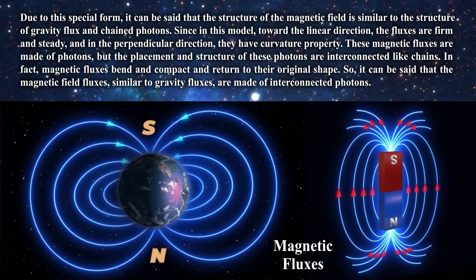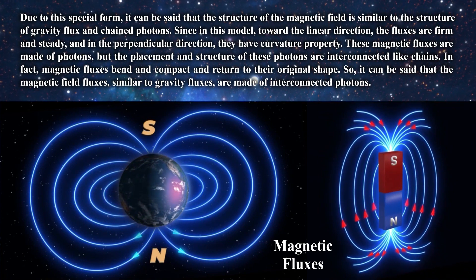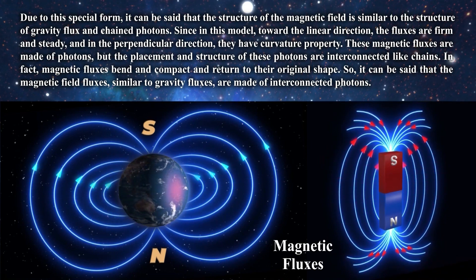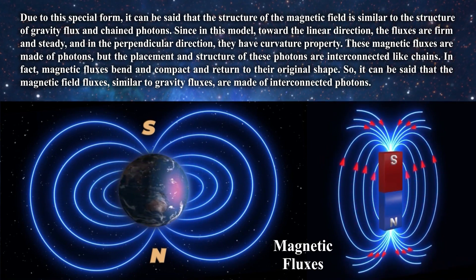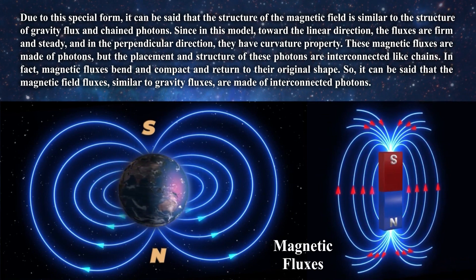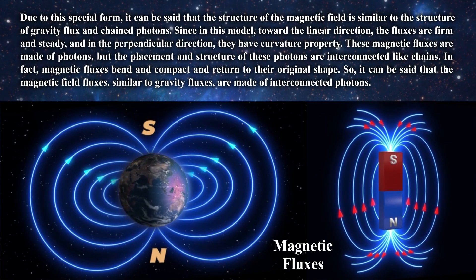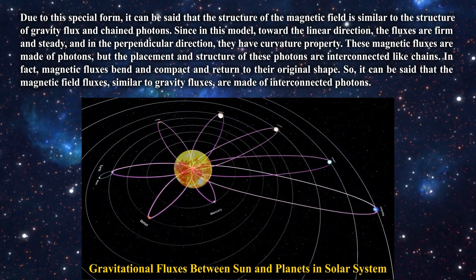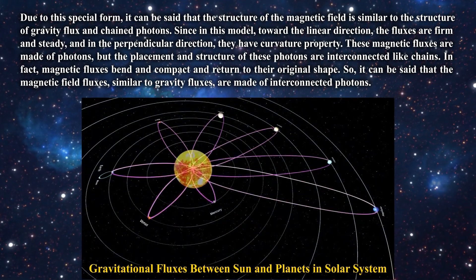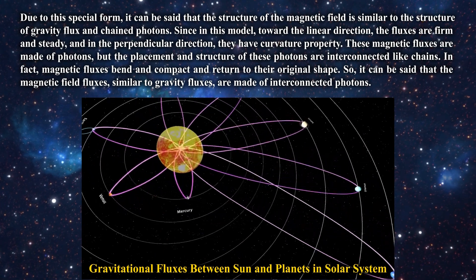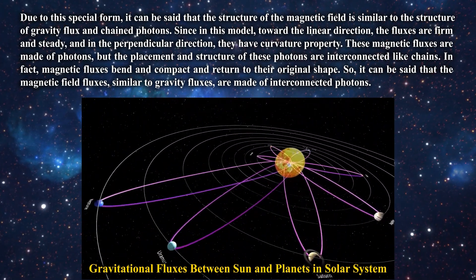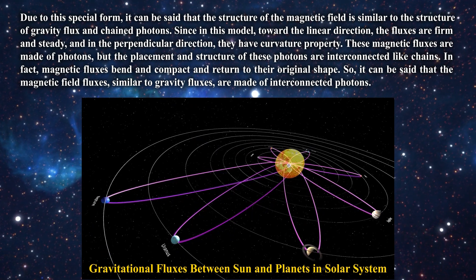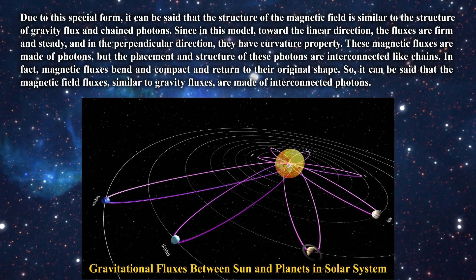Since in this model, toward the linear direction the fluxes are firm and steady, and in the perpendicular direction they have curvature property. These magnetic fluxes are made of photons, but the placement and structure of these photons are interconnected like chains. In fact, magnetic fluxes bend and compact and return to their original shape. So it can be said that the magnetic field fluxes, similar to gravity fluxes, are made of interconnected photons.